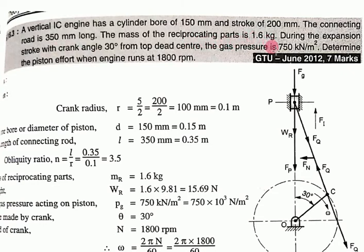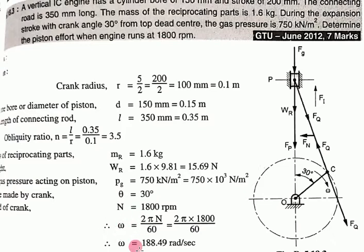During expansion stroke, crank angle θ is 30° from TDC, gas pressure pg = 750 kN/m², and engine runs at 1800 rpm. Find piston effort. From rpm we find angular velocity ω = 2πN/60 = 188.49 rad/s. Stroke is the distance the piston travels when crank rotates 180°, so crank radius = stroke/2 = 200/2 = 100 mm.